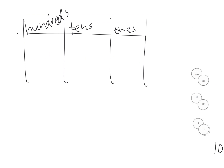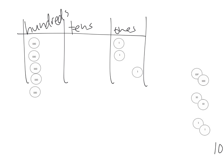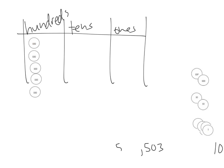Suppose we start off with the number 503 — one, two, three, four, five hundred and three. We want students to be able to exchange discs. What if we took away one? We have 502. Take away another one — 501. Take away another one — now we have 500. So we had 503, then 502, then 501, now 500. The question is: what's next?